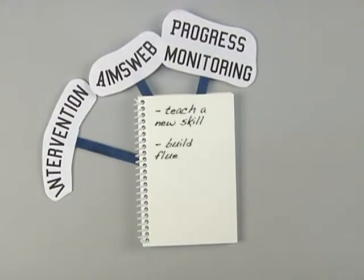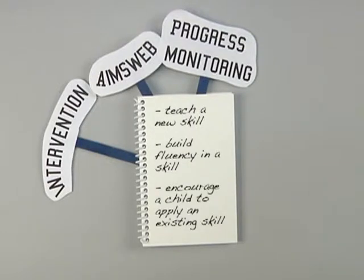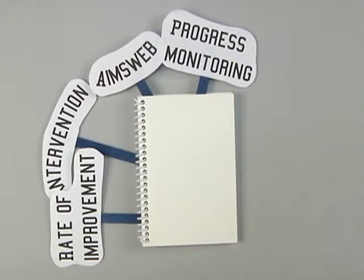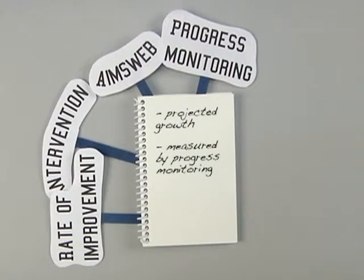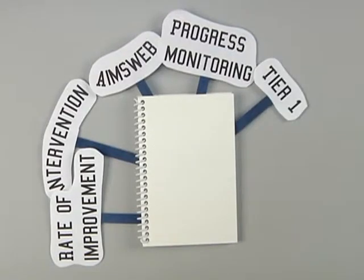An academic intervention is a strategy used to teach a new skill, build fluency in a skill, or encourage a child to apply an existing skill to new situations or settings. The rate of improvement is a projected amount of growth measured by progress monitoring while interventions are in place for a student.